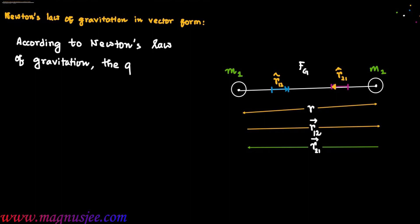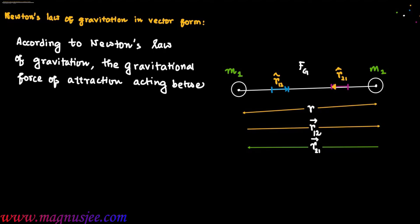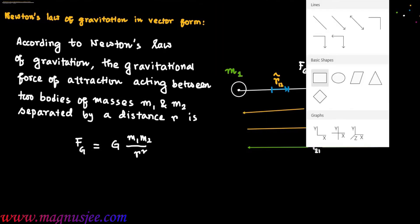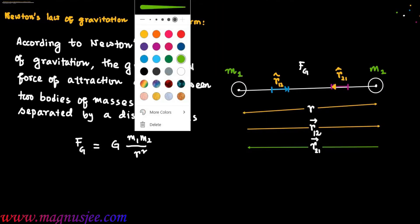According to Newton's law of gravitation, the gravitational force of attraction acting between two bodies of masses m1 and m2 separated by a distance r is given by: Fg = G·m1·m2 / r².